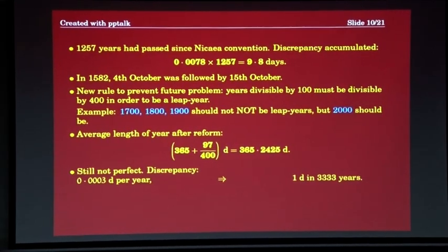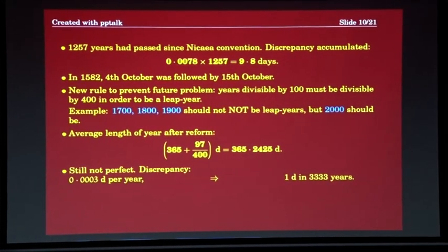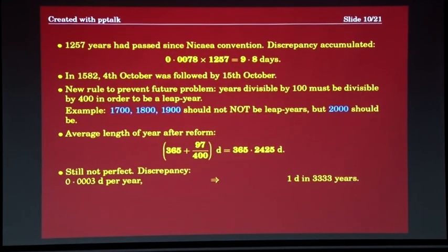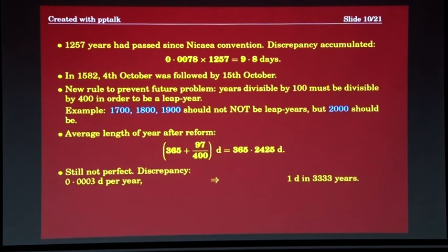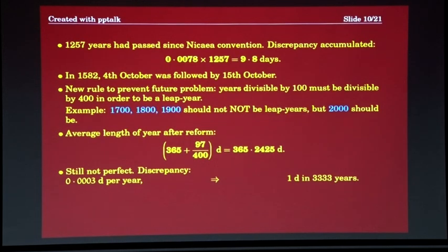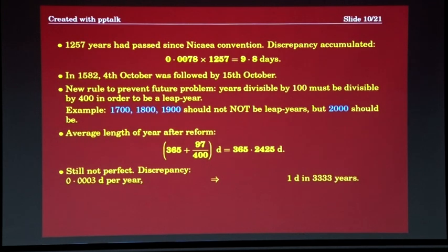You can ask what we're going to do about that remaining discrepancy. I think humankind has done something very clever — they have started using the planet in a way that it won't last for 3,000 years from now, and probably even 300 years is a far cry. So this problem will not arise. Very clever.